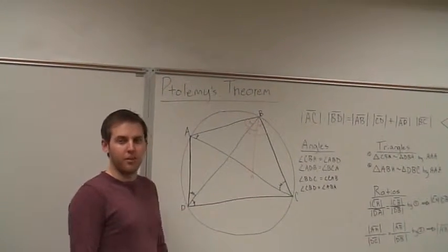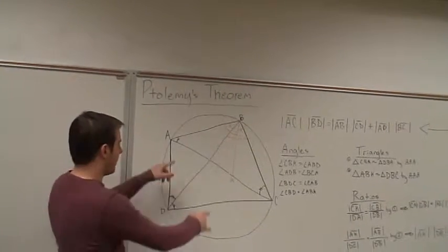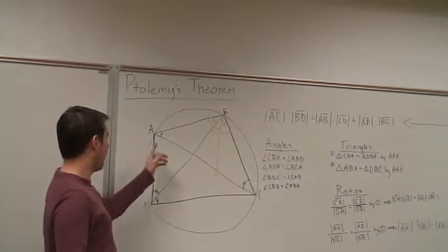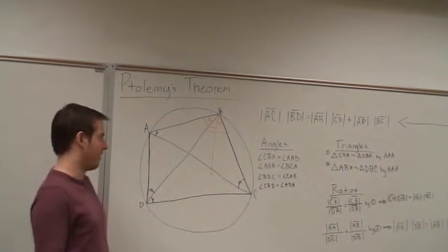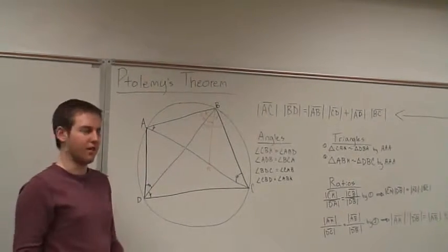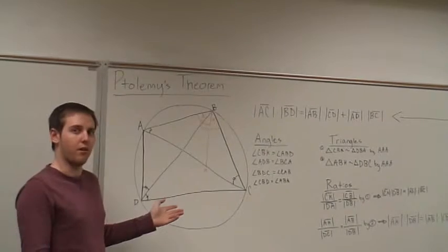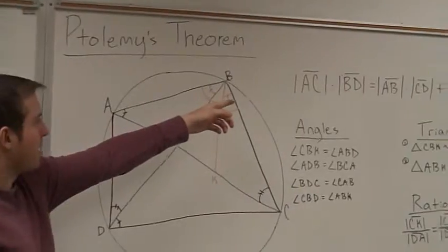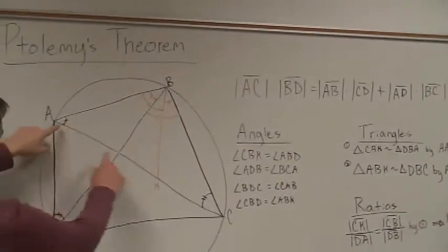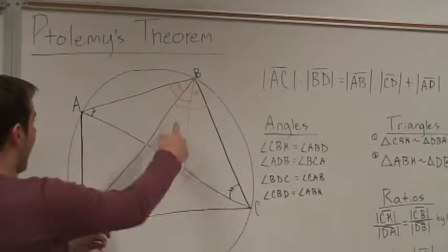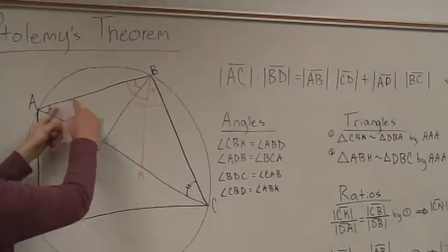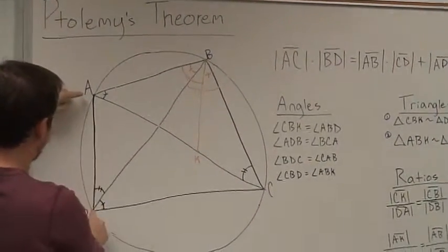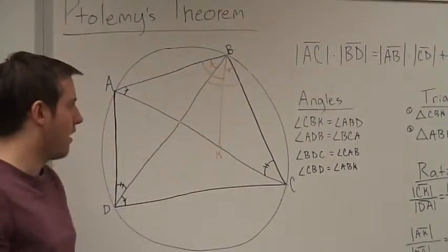Now we are going to talk about the proof of Ptolemy's theorem. Ptolemy's theorem states that the length of the diagonals, when multiplied together, is equal to the sum of the products of opposite sides. To help visualize it, we've drawn a circle and inscribed a quadrilateral ABCD within it. Here is Ptolemy's theorem: the length of diagonal AC multiplied by the length of diagonal BD equals the length of AB times the length of CD, added with the length of AD times the length of BC.